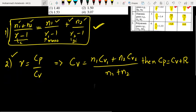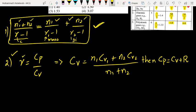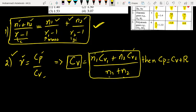The second method is that gamma is equal to Cp over Cv. This is the combined Cv, the collective Cv of the gases: N1Cv1 plus N2Cv2 divided by N1 plus N2. Here you find Cv. Then Cv plus R, and finally you put the value of gamma, Cp divided by Cv.